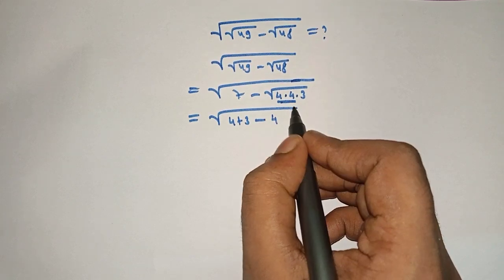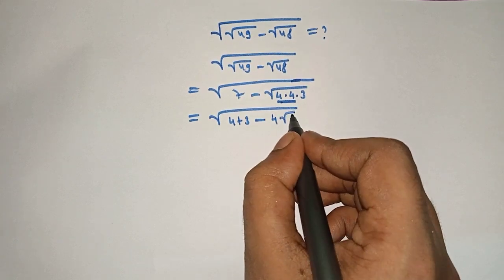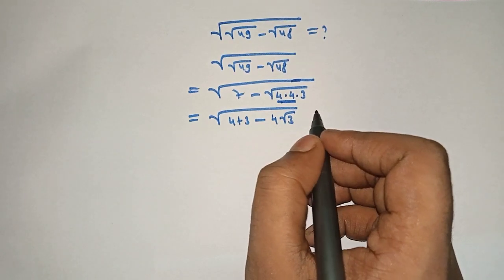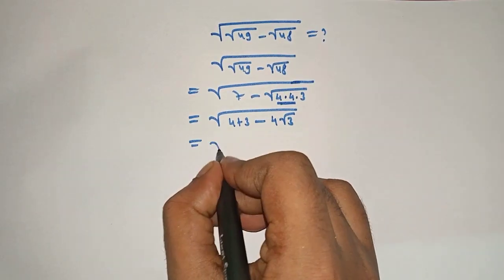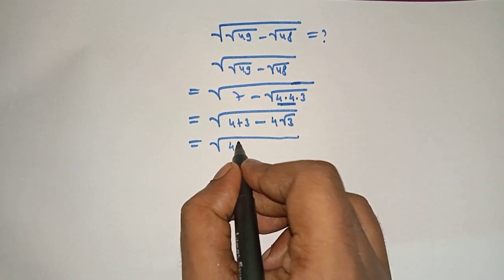4 will come out of square root and under the square root remain 3. Now square root of 4 plus 3 minus...